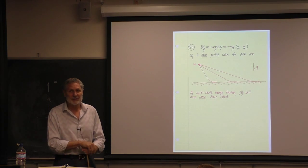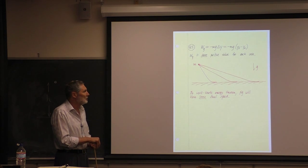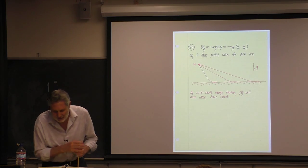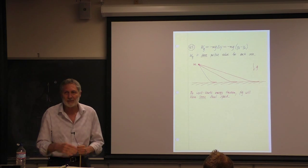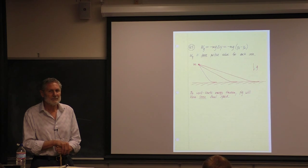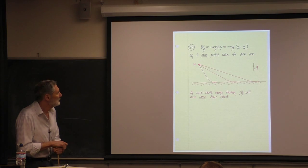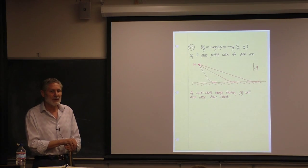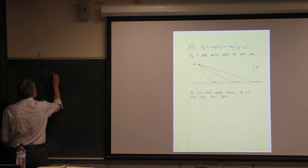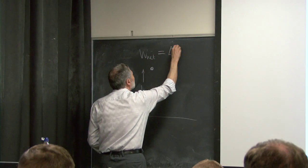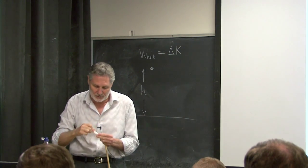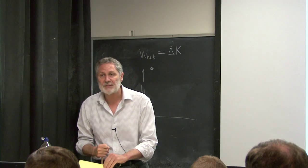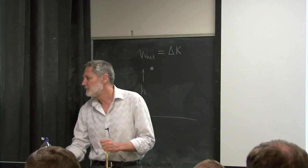How do the final kinetic energies compare across the three ramps? They're the same, by the work-kinetic energy theorem. The normal force does no work; it's frictionless. The work done by the net force equals the change in kinetic energy. Since the work is the same and the object starts from rest in each case, they all have the same final speed.